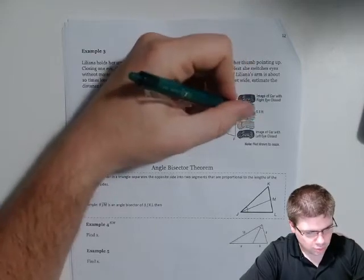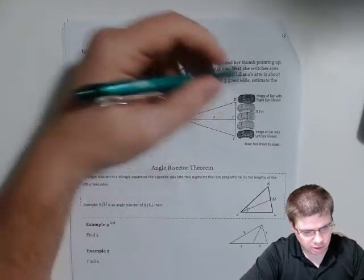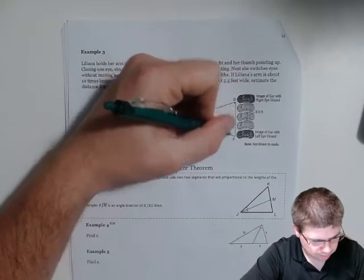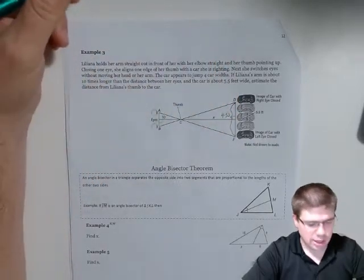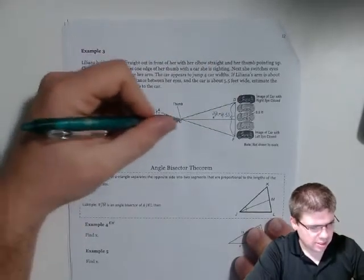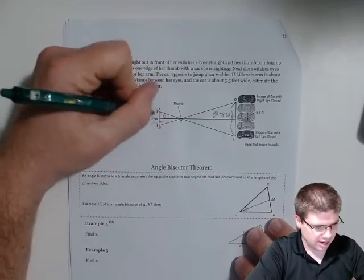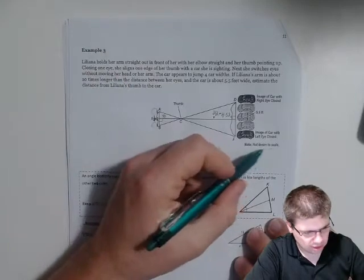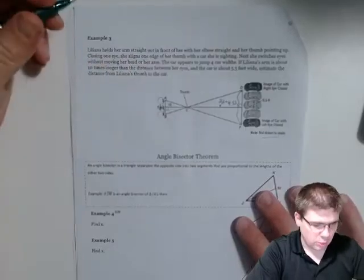So what we're seeing is something like this - the car is this whole width of 5.5. So if it jumps four car widths, there are, it would be four times 5.5 for this distance here. So this distance here would be four times 5.5, which equals 22. And then this distance between her eyes, all it says is that this distance to her thumb is about 10 times the distance between her eyes. That would mean that this distance here is one. This is certainly not drawn to scale. That's the situation that we're drawing and we're supposed to figure out what X is.